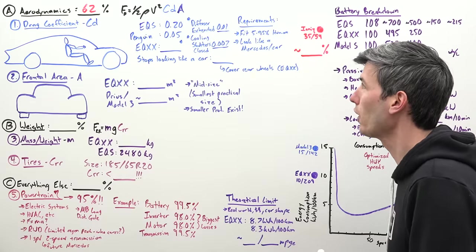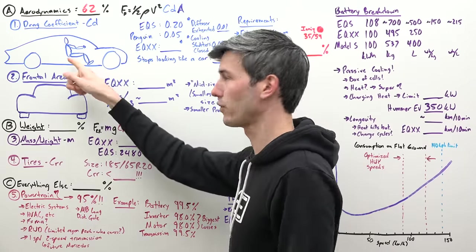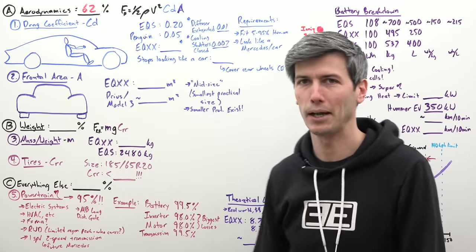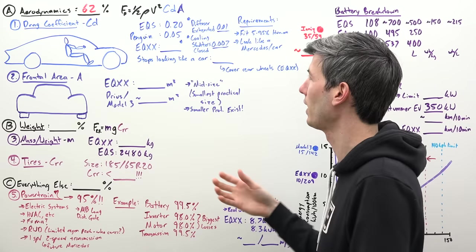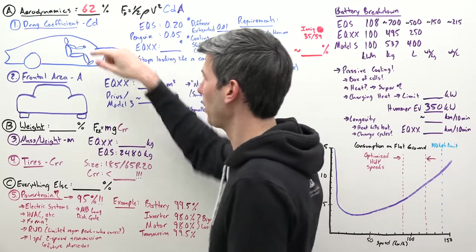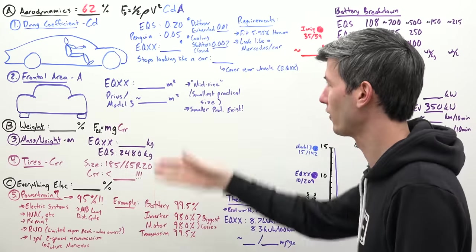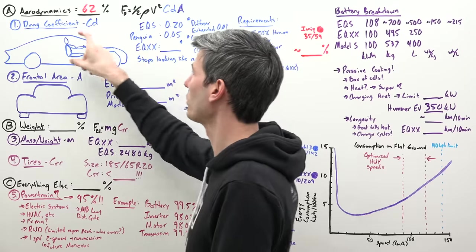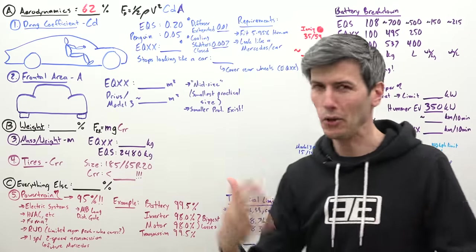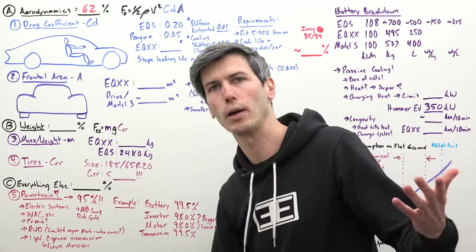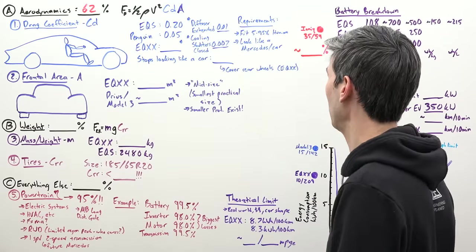As far as drag coefficient, basically you take a 5 to 95% human, put them within a space, then try and design a car around that space so the human can fit and you have a really aerodynamic shape around them that also looks like a car. Part of the requirement is it needs to look like a car.